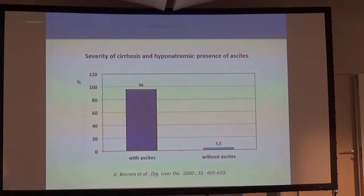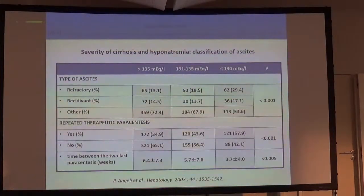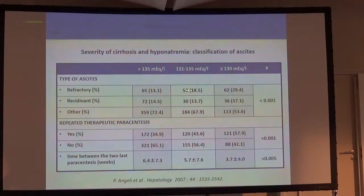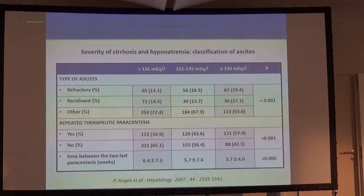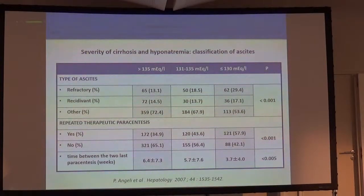So we decompensate the cirrhosis. Not only this, but the probability to develop hyponatremia in this patient is strongly related to the severity of ascites. If a patient has a difficult-to-treat ascites — a refractory ascites — or if a patient requires frequently large volume paracentesis, the probability to develop hyponatremia is much higher.